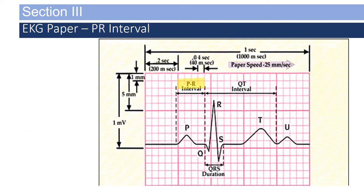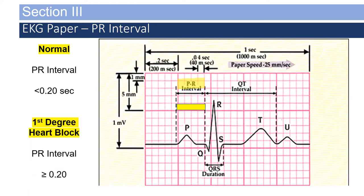The PR interval is measured from the beginning of the P-wave to the beginning of the QRS. A normal PR interval is less than 0.20 seconds — on the EKG paper, five very small boxes equals 0.20 seconds, so it must be less than that to be considered normal. A PR interval greater than or equal to 0.20 seconds is considered a first-degree heart block. A first-degree heart block in and of itself is not a rhythm; you would declare it as a sinus rhythm with a first-degree heart block.